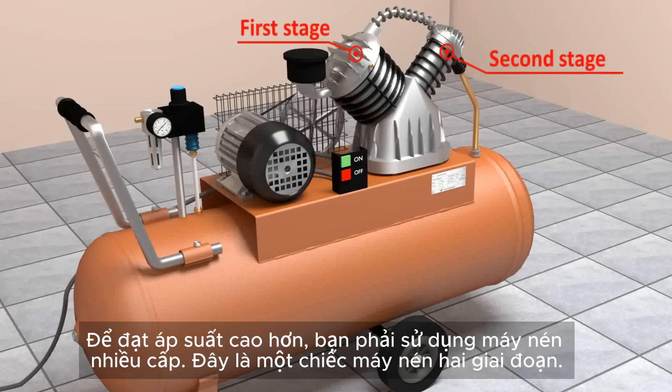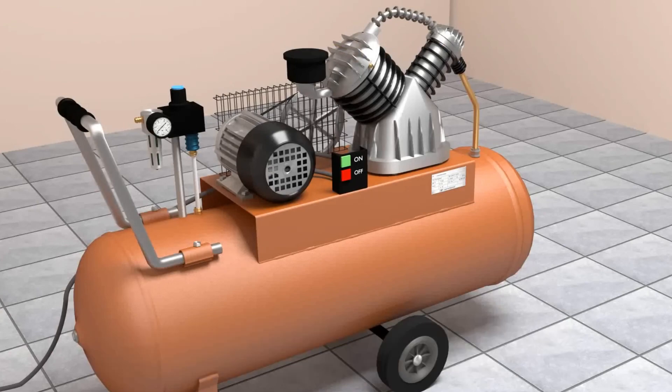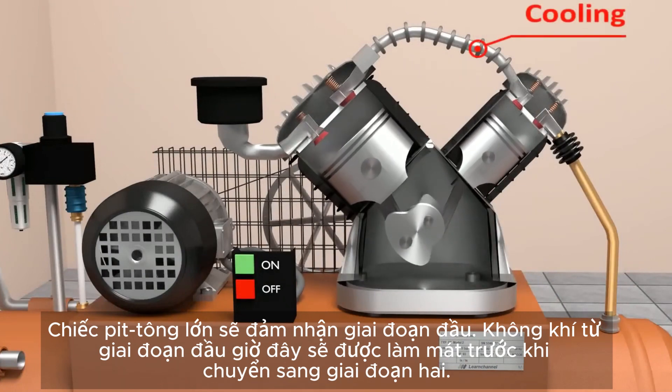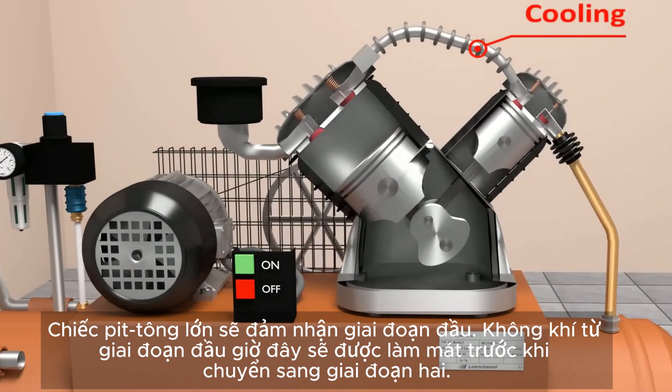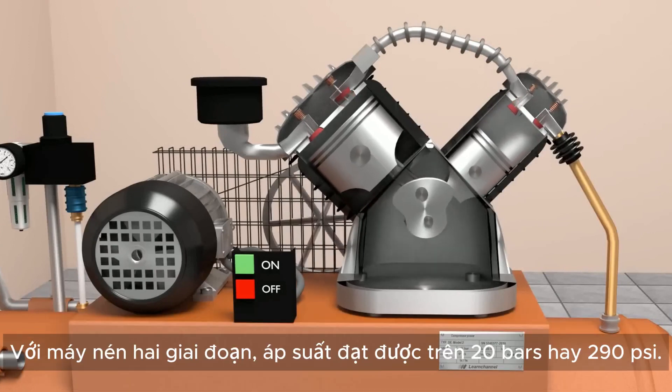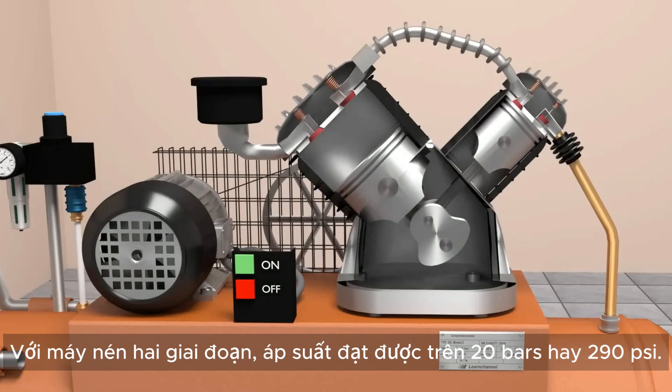To achieve higher pressures, you would use a multi-step compressor. Here, a two-stage compressor is shown. The large piston builds the first stage. The air leaving the first stage can now be cooled before it enters into the second stage. With a two-stage compressor, you achieve pressures over 20 bars, or 290 psi.